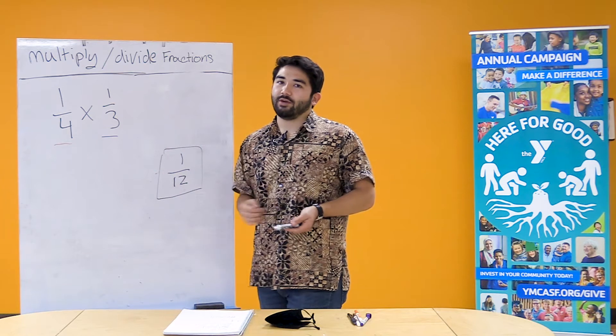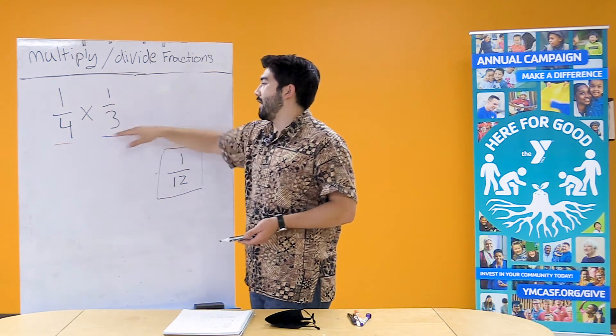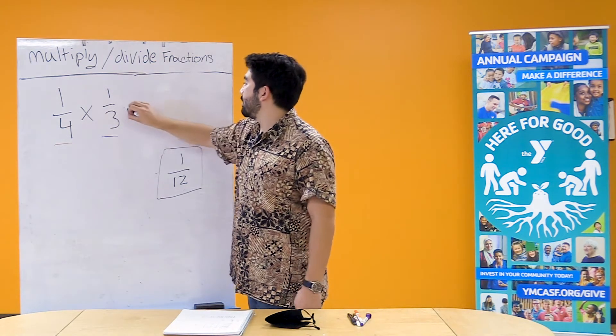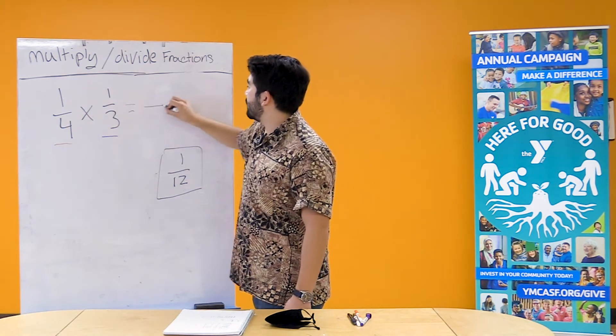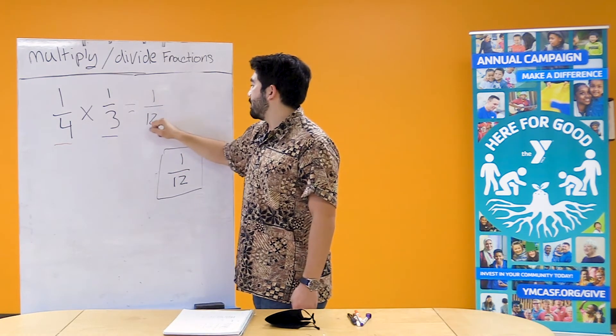I love multiplying by fractions because you don't need to change the tops or you change the bottoms. You just multiply straight across. So 1 times 1 is going to equal 1. 4 times 3, it's gonna equal 12.